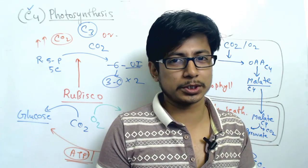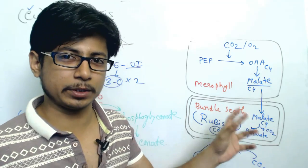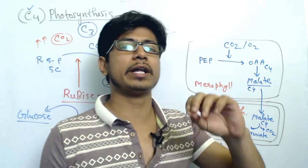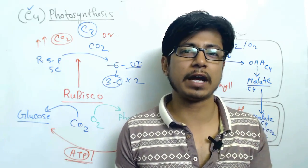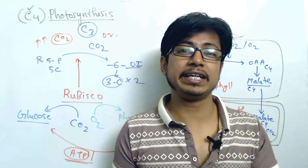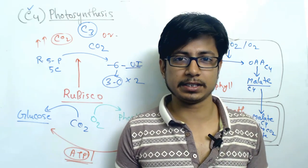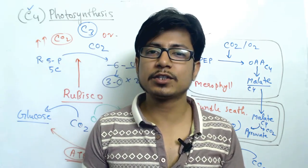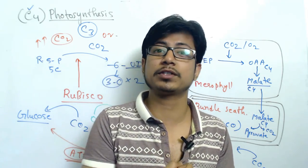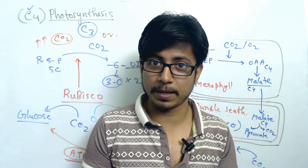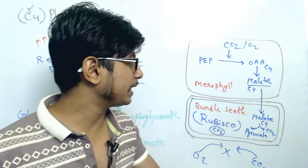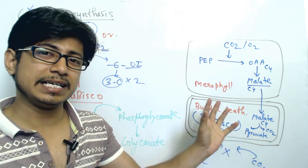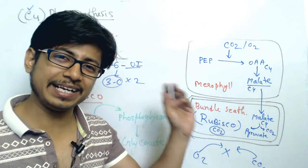The C4 pathway is therefore very helpful when there is a low concentration of carbon dioxide in the environment, and when the temperature is very high. In high-temperature environments, cells generally don't want to open the stomata very much, because doing so causes water loss in the plant. In these cases, the plant can take up carbon dioxide when the temperature is slightly lower, transport it to the bundle sheath in the form of malate, and utilize it there.